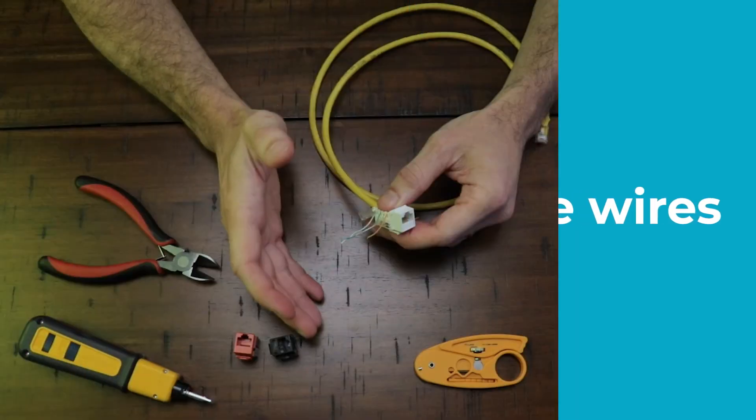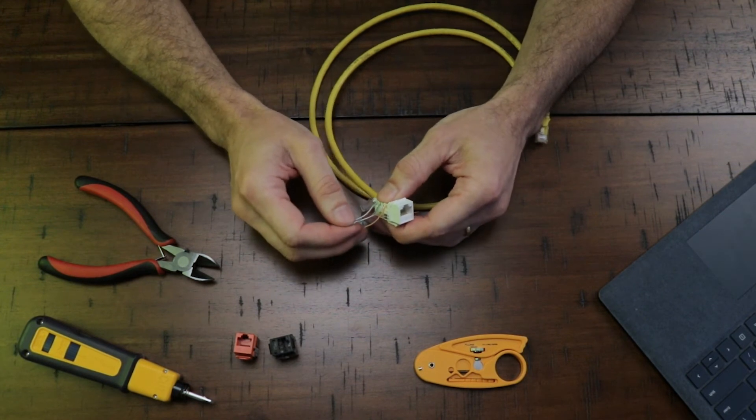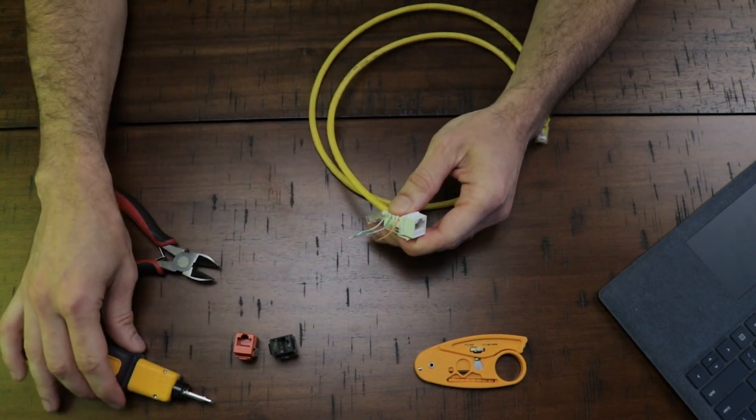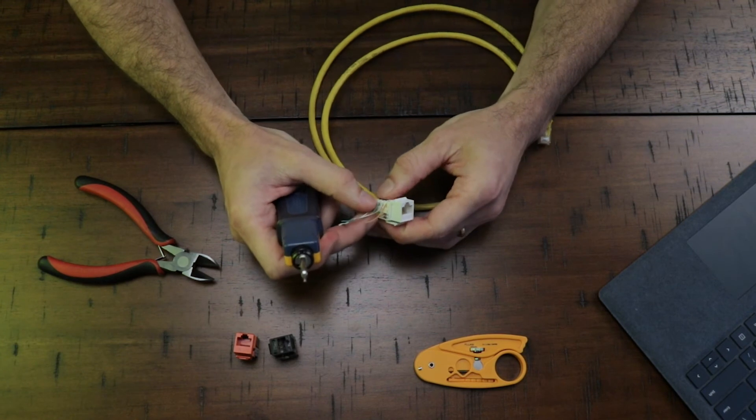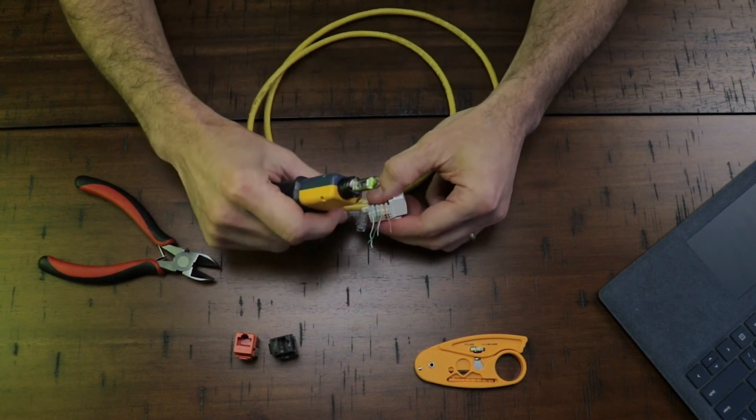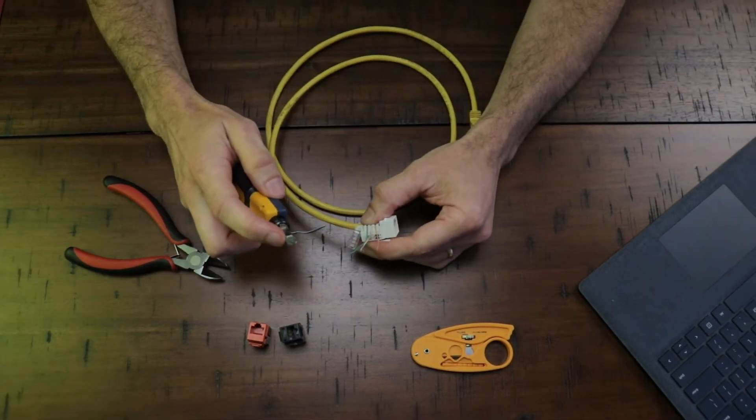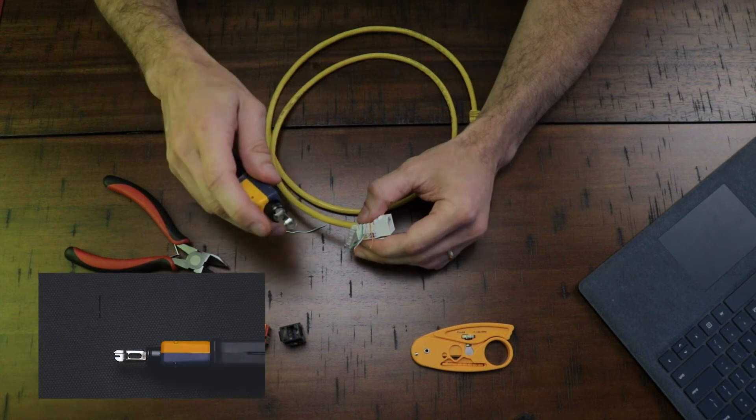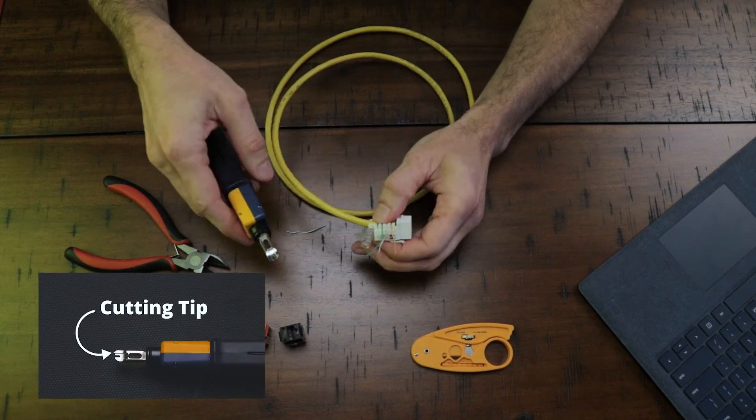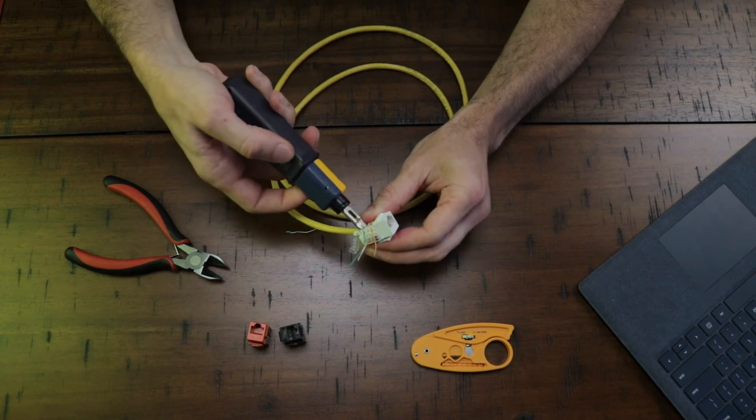The last step of making or repairing a keystone jack is to punch down each wire by using a punch down tool. Just place the blade on top of the wire and punch down until you hear the tool snap. Just make sure the cutting tip of the blade is outside of the connector, not on the inside.